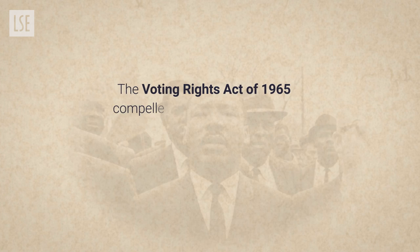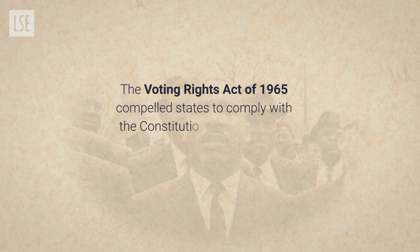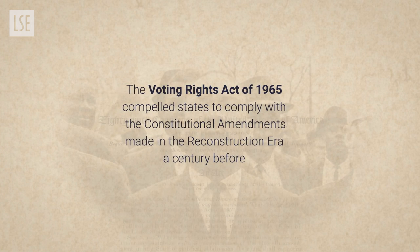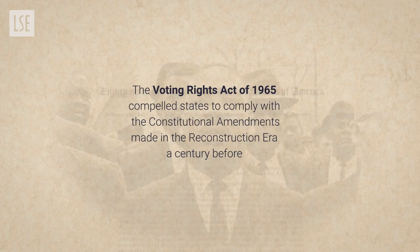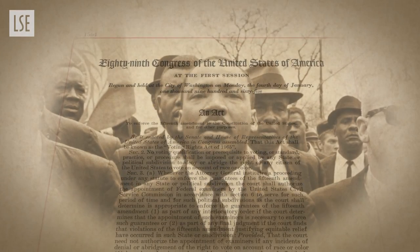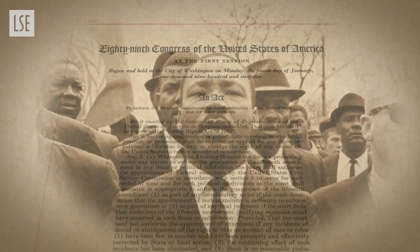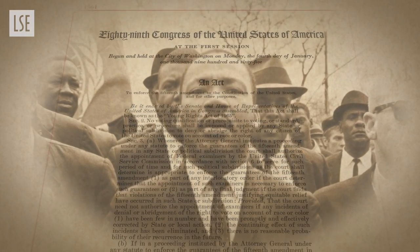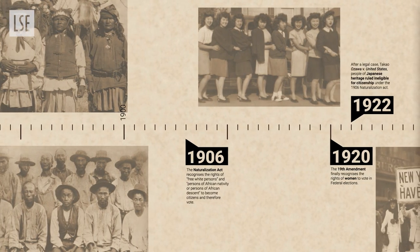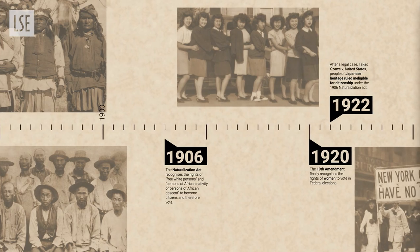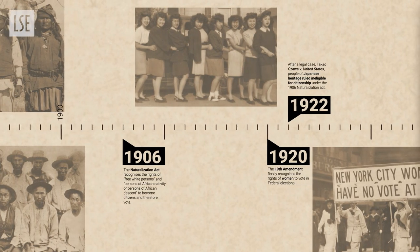The final measure that addressed this was the 1965 Voting Rights Act, which imposed strict federal guidelines on how voting had to be organized in states, specifically to ensure that African Americans were not kept from voting by unequal-impact laws.